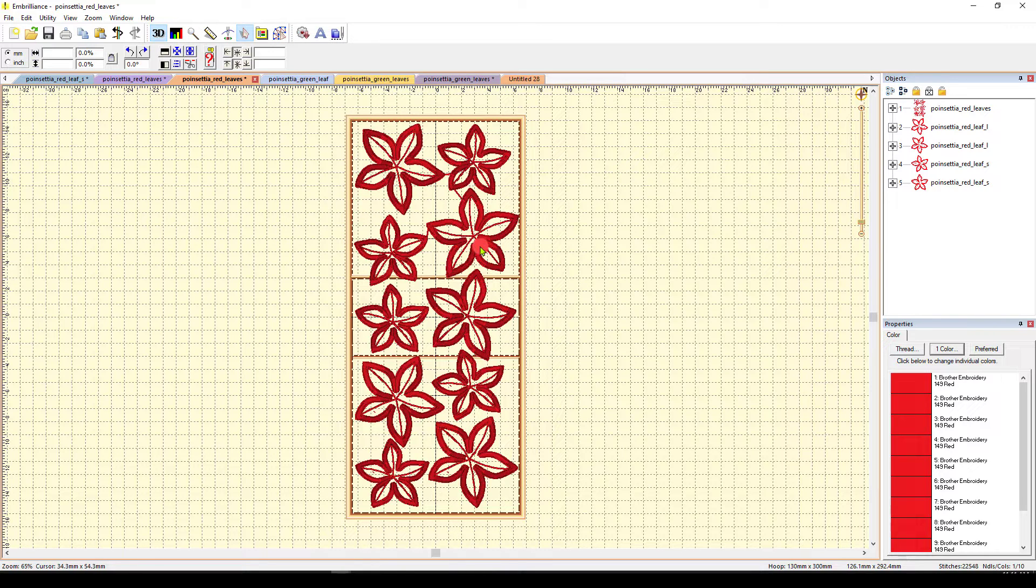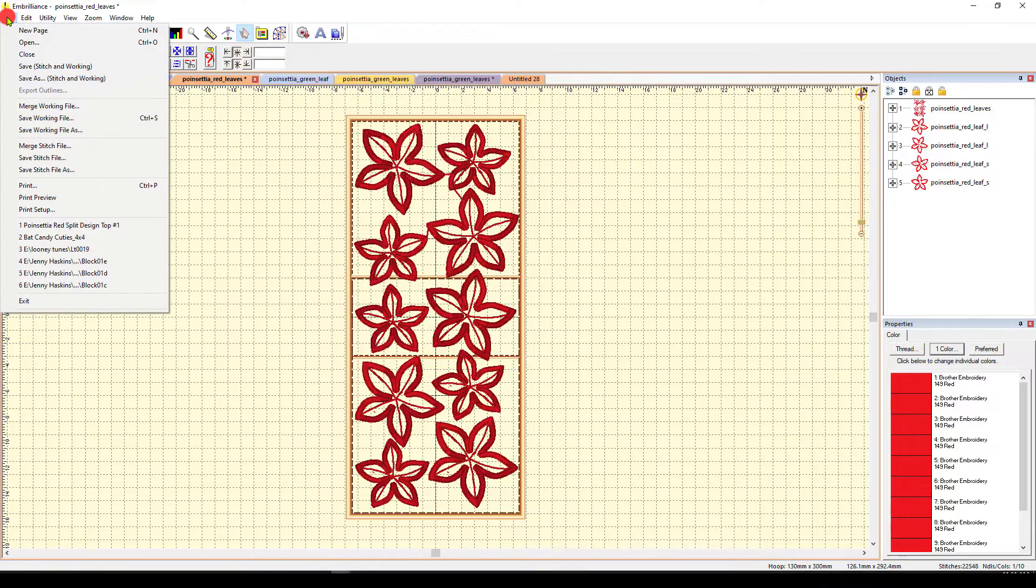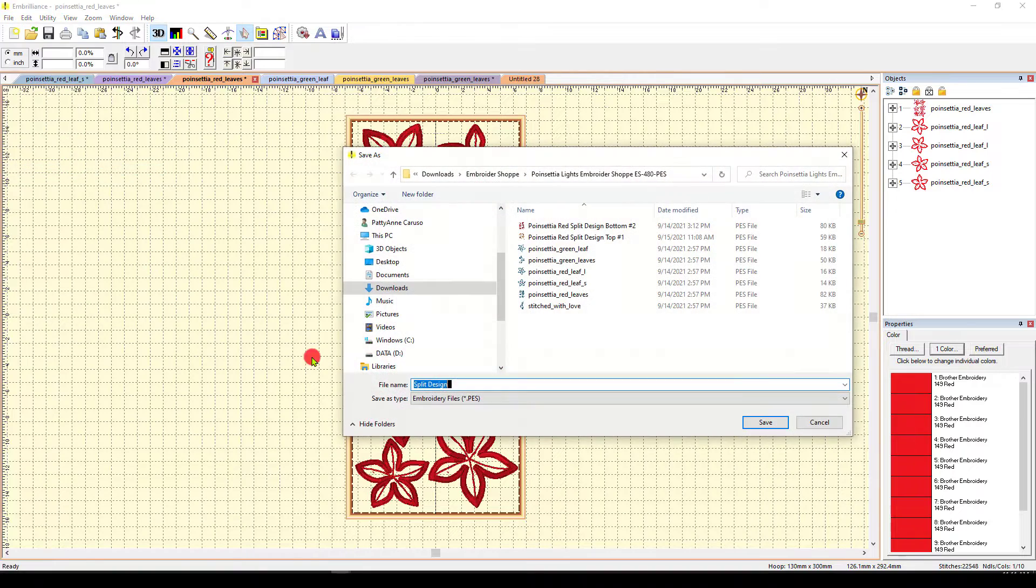But check this out now. This is how many I can fit in one hooping with the five by twelve hoop. So notice I can do one, two, three, four, five big ones, and one, two, three, four, five small ones. So I fit these all in here. And now I need to save this. So I'm going to go to file, save stitch file as, and it automatically just names it split design. So I'll just leave it like that for demonstration purposes. So I'll say save.